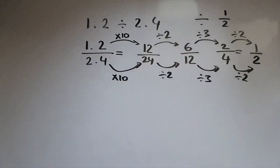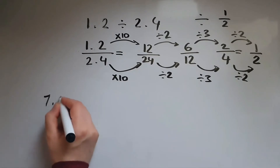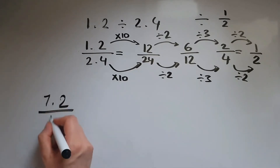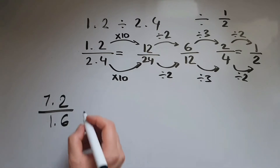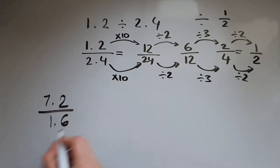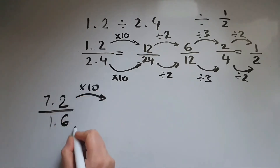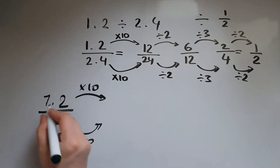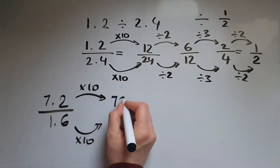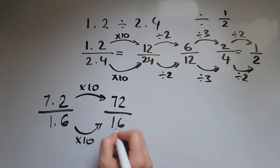Let's have a look at another example — we'll do 7.2 divided by 1.6. To get rid of the decimal point we're going to multiply both of the numbers by 10. 7.2 times 10 gives us 72, and 1.6 times 10 gives us 16.